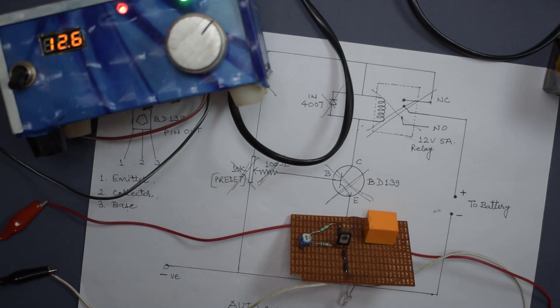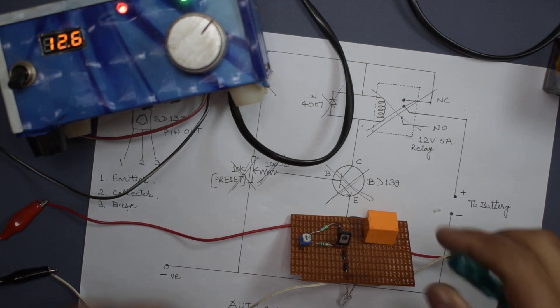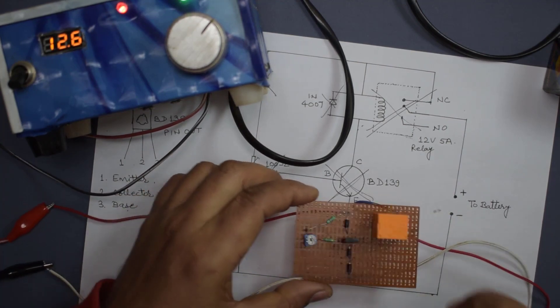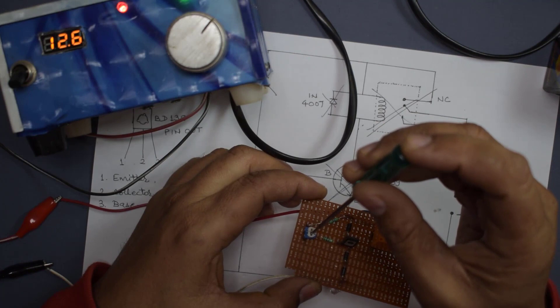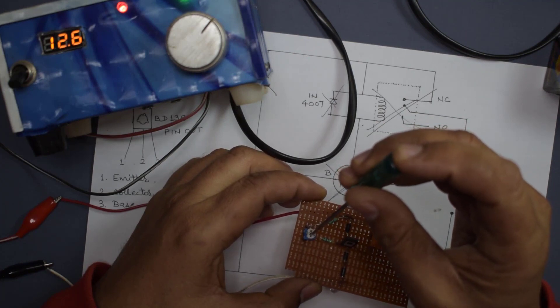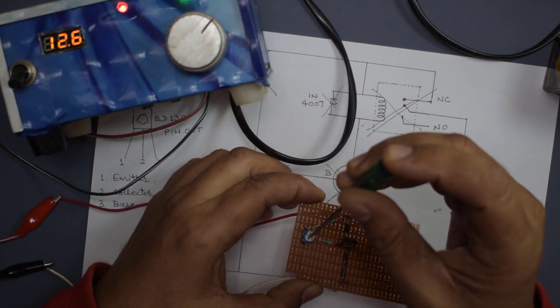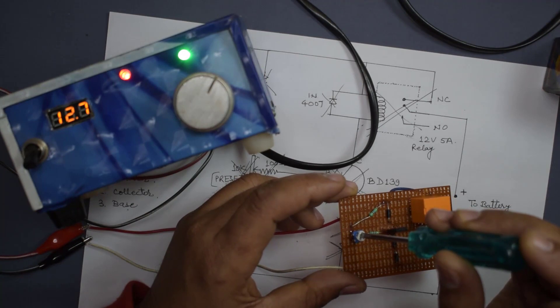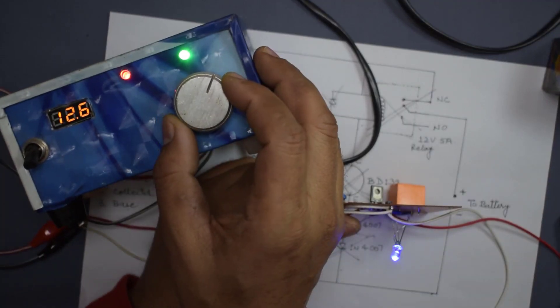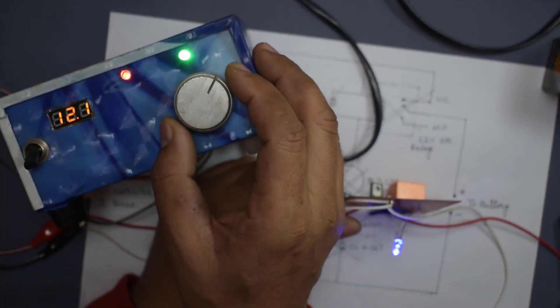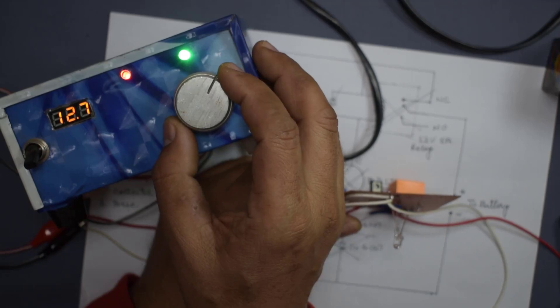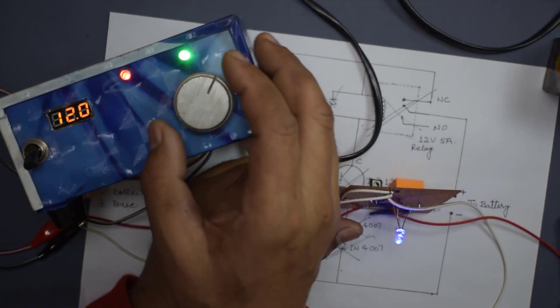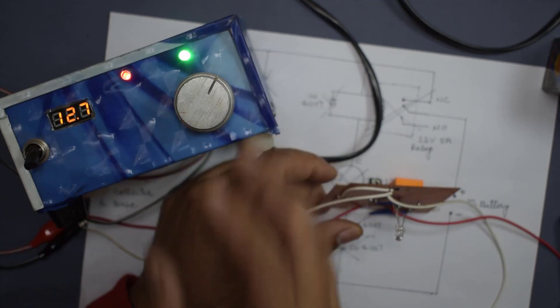Let us set the threshold value of this circuit to 12.6 volt. Okay friends, at this time the threshold value is set to 12.2 or 12.3 volts.